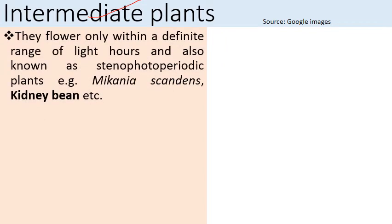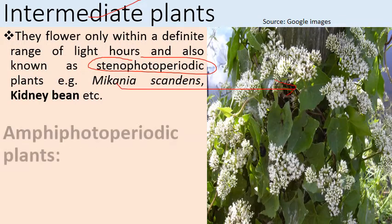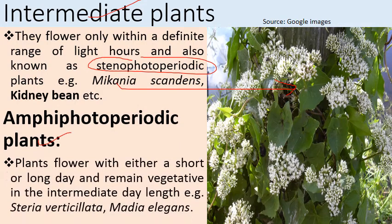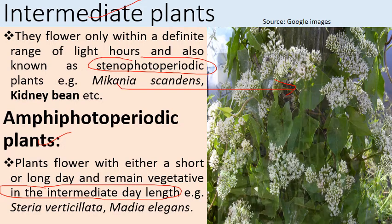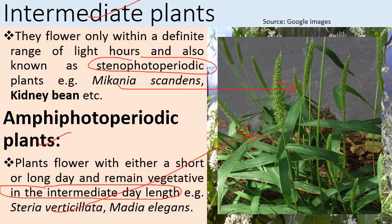Intermediate plants flower only within a definite range of light hours and are also known as stenoperiodic plants. Examples are Mikania scandens and kidney bean. Amphiphotoperiodic plants flower under either short or long day conditions but remain vegetative in intermediate day lengths. Examples are Setaria verticillata and Madia elegans.